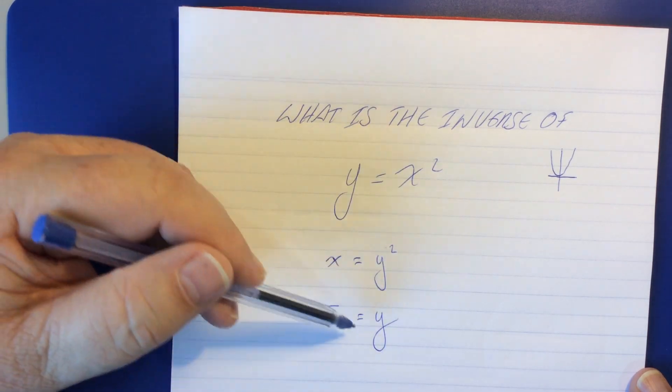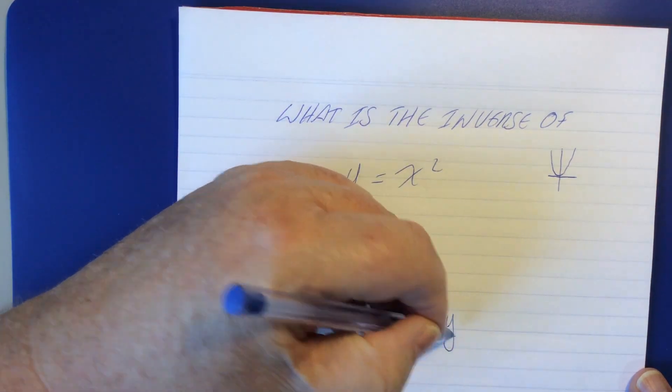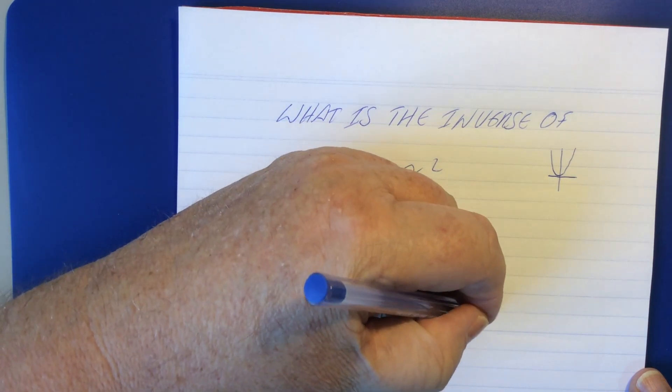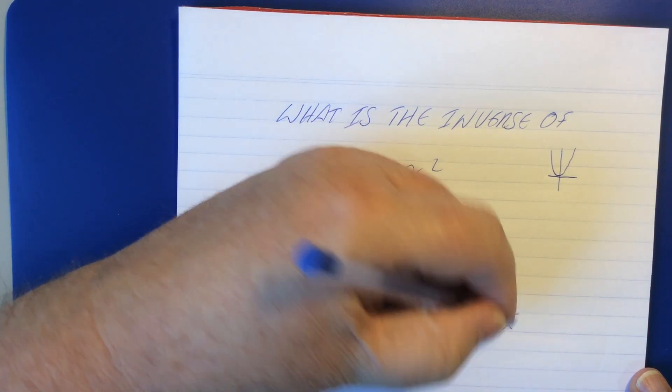So that was over very quickly. That's all there is to it. So, the inverse of this function is y equals plus or minus root x.